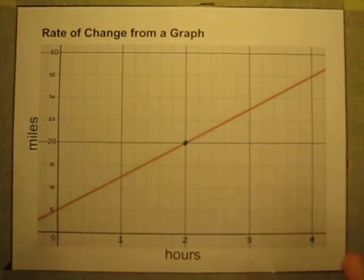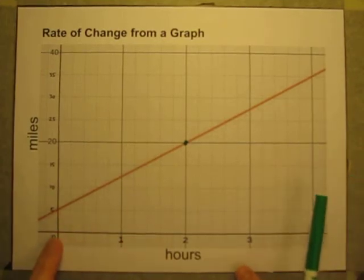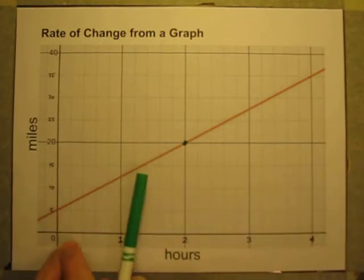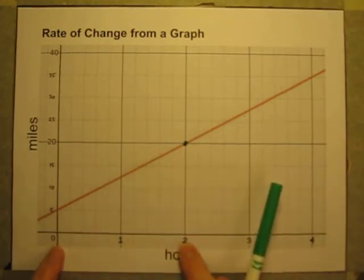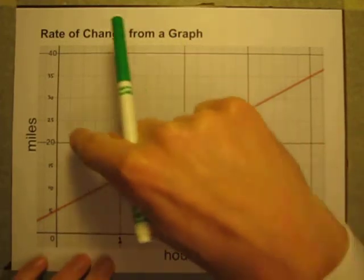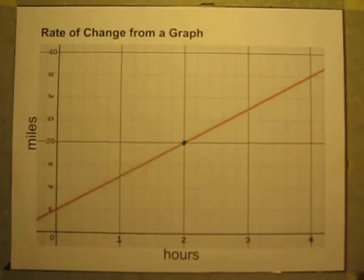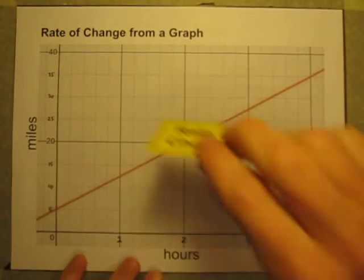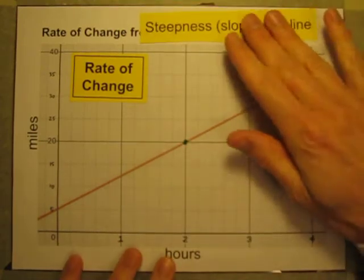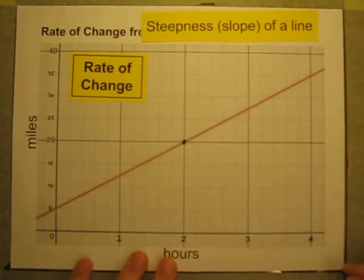The reason I can tell that is we're not starting at 0. The starting point is 5. So in those 2 hours of time, you didn't actually travel 20 miles. You can't just do any y value divided by x value. So what we're going to do here to get the rate of change — also known as the steepness or the slope of the line —